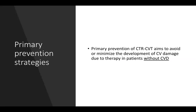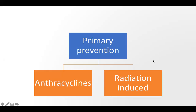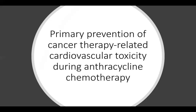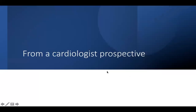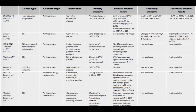What are the primary preventive strategies? From the word 'primary,' these patients have no cardiovascular disease yet. Primary prevention aims to avoid or minimize the development of cardiovascular damage. The guidelines for primary prevention mention two items: the first is anthracyclines, and the second is radiation-induced toxicity. For anthracyclines, there are trials for patients receiving anthracyclines who do not have cardiovascular disease.